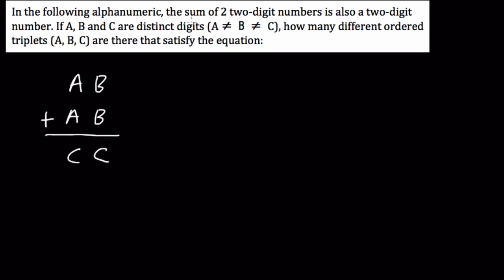In the following alphanumeric, the sum of two two-digit numbers is also a two-digit number. If A, B, and C are distinct digits - this means they're not equal to each other - how many different ordered triplets are there that satisfy this equation?